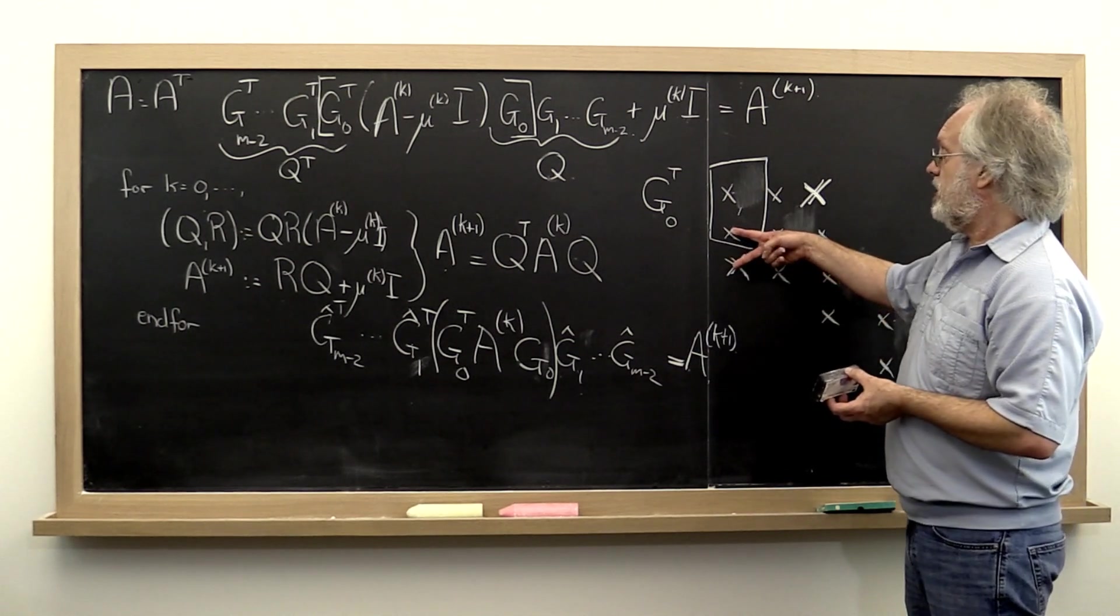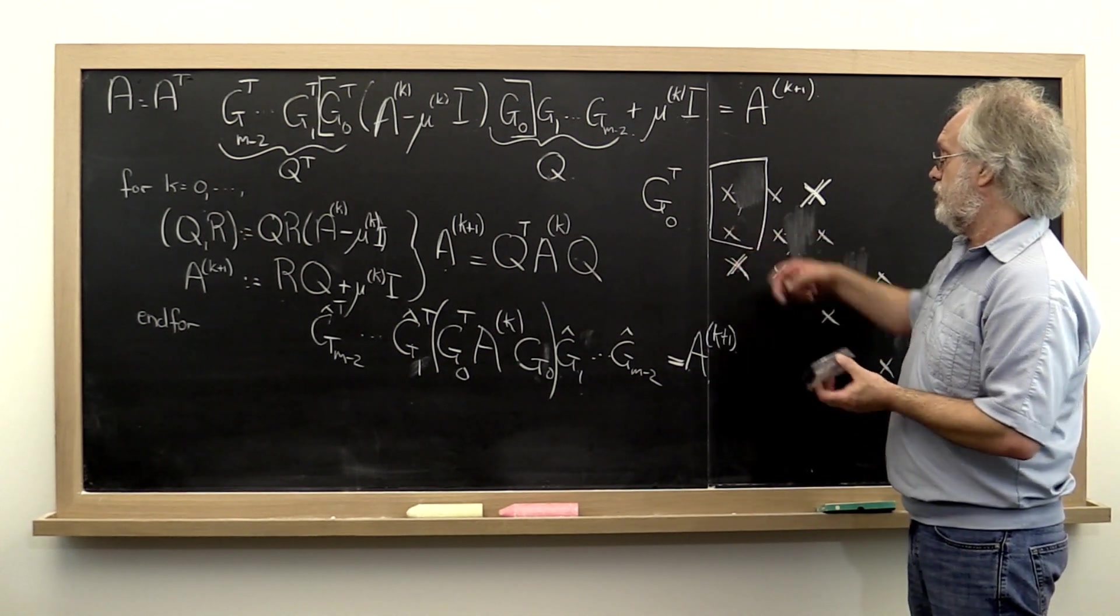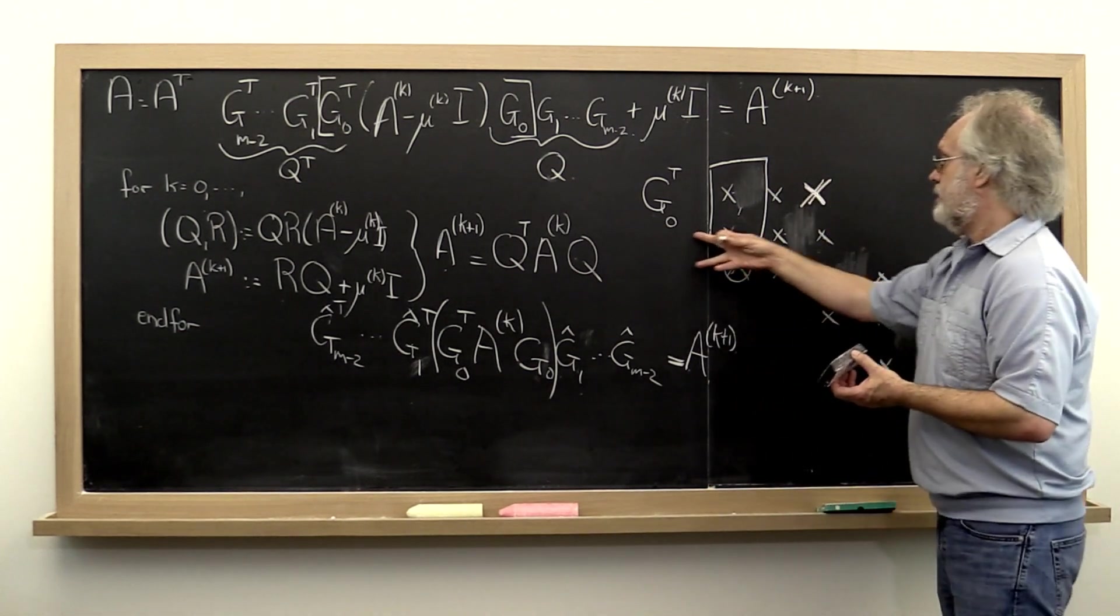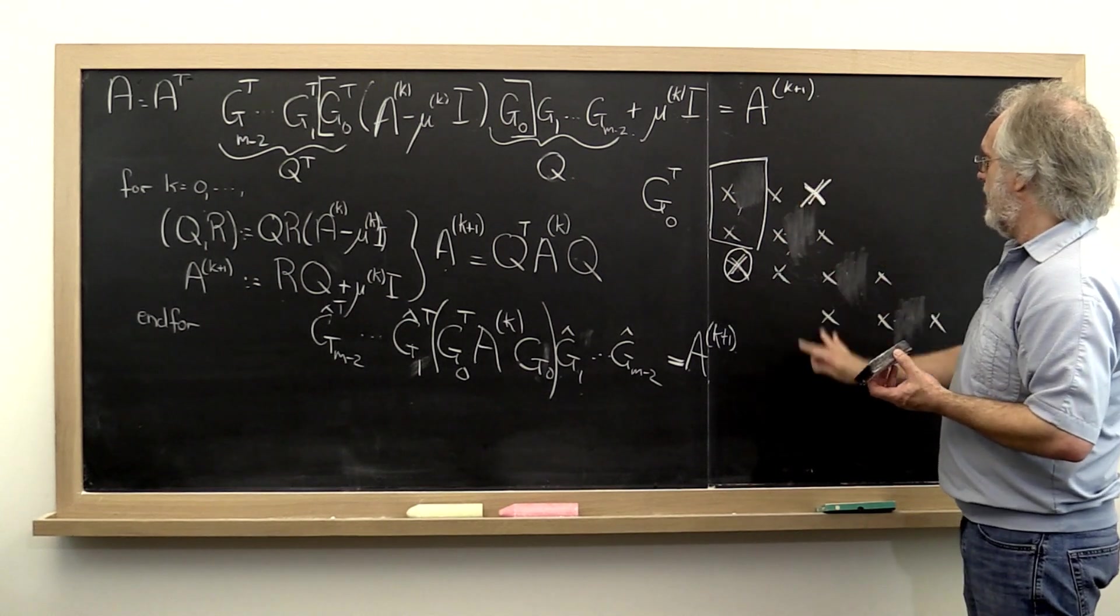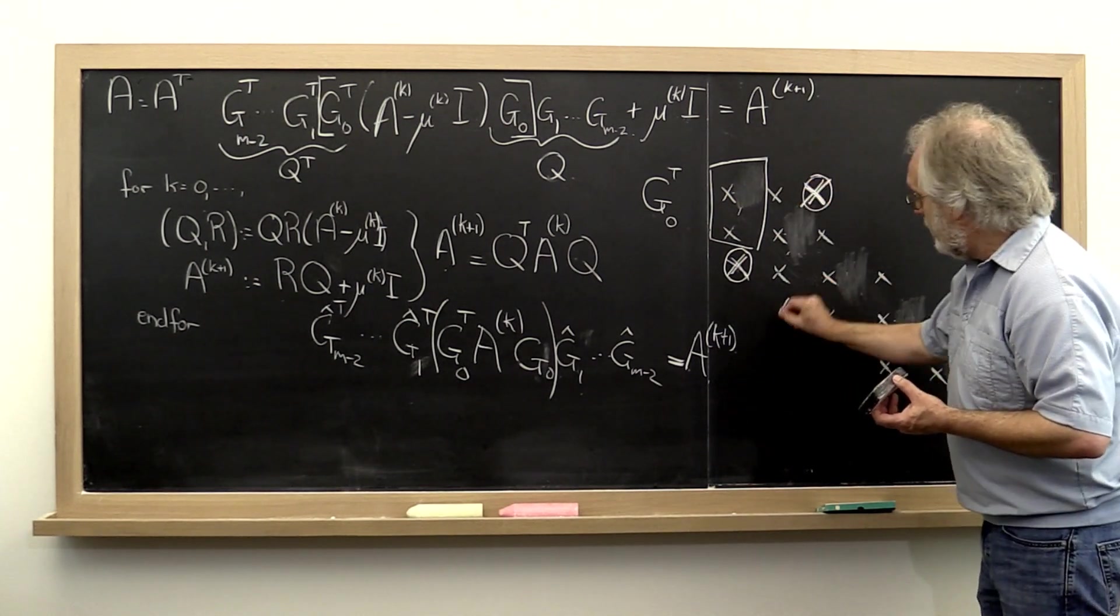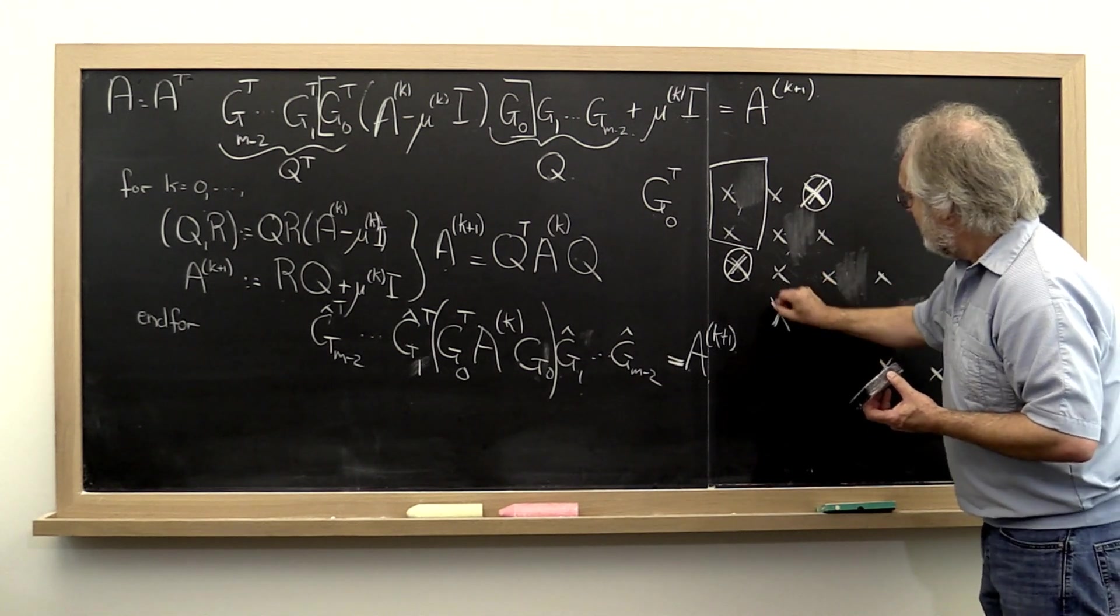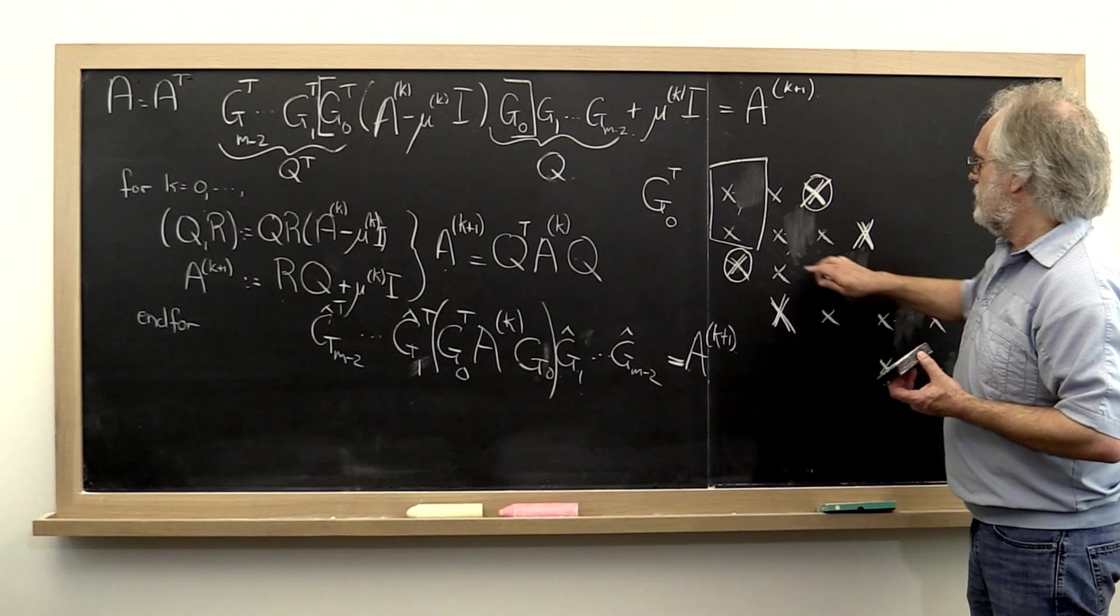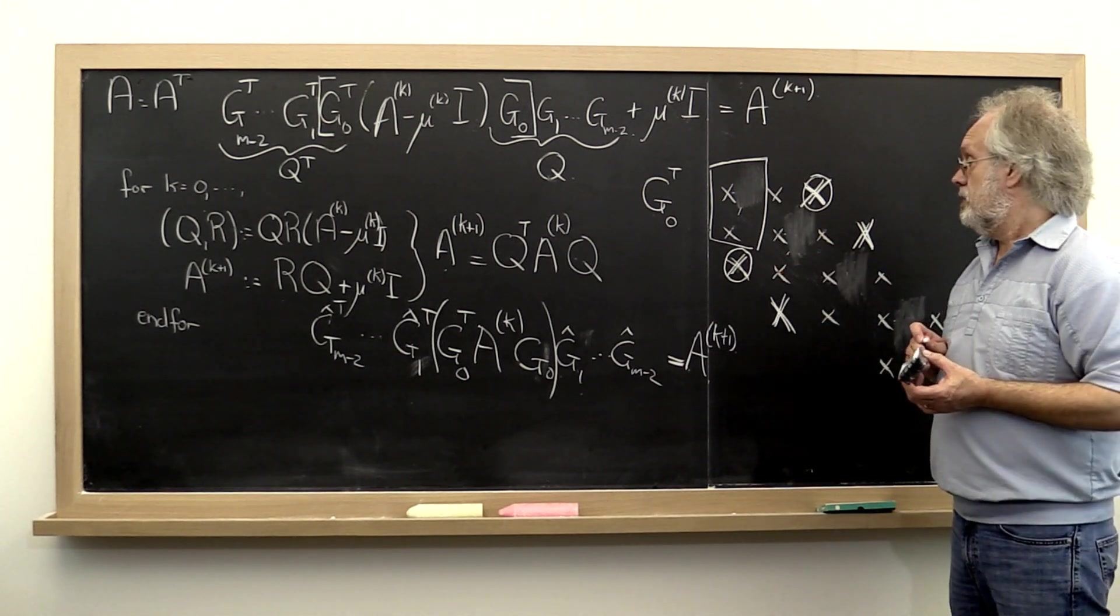So what happens? We compute the Givens rotation off of these two entries to introduce a zero here. If we apply this from the left and from the right, then we introduce a zero here as well by symmetry. And we introduce filling nonzeros right here and right here. These entries are changed as well.